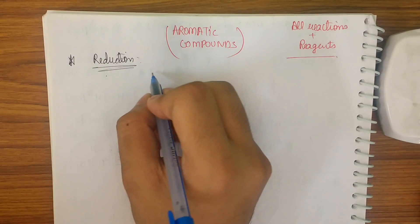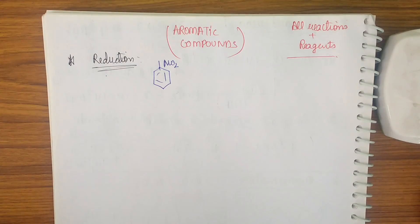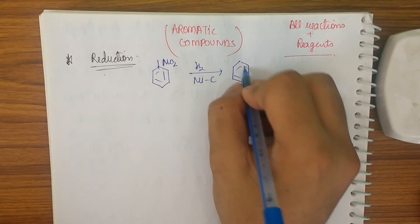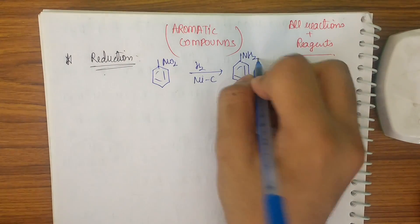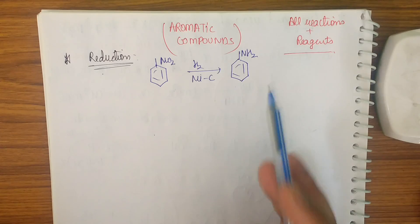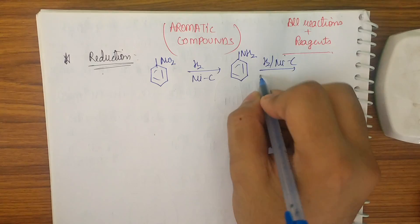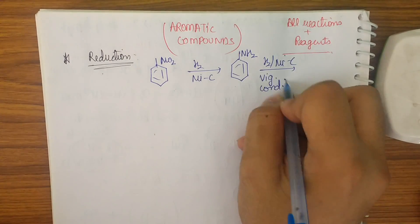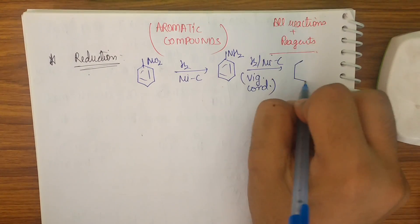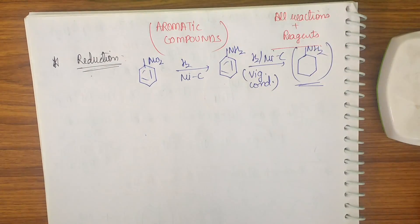If I have nitrobenzene and react it with H₂/Ni, the product is aniline — NO₂ is reduced to NH₂, but the ring will not be reduced because it is aromatic and hence stable. However, under vigorous conditions (high temperature and high pressure), the ring will also be reduced.